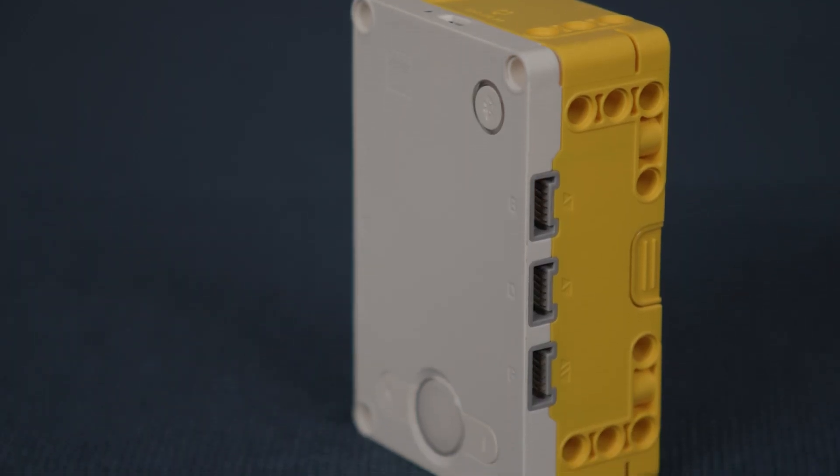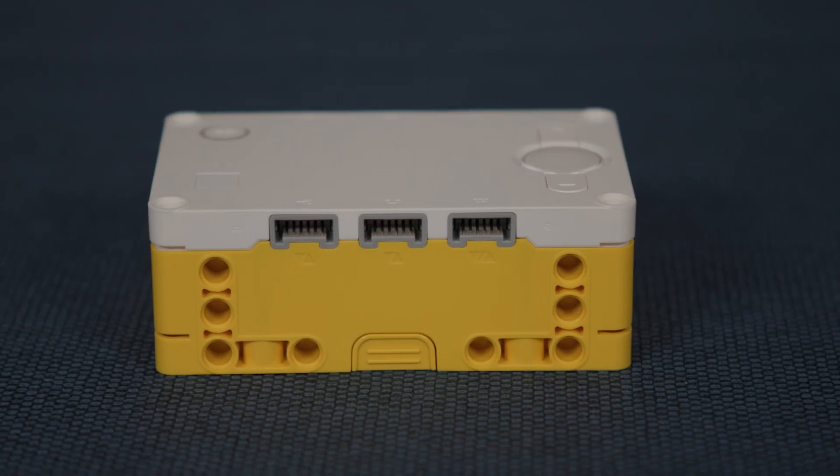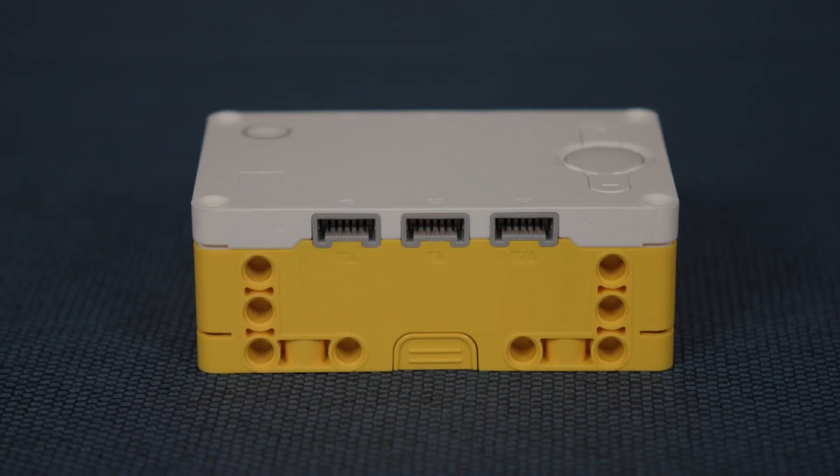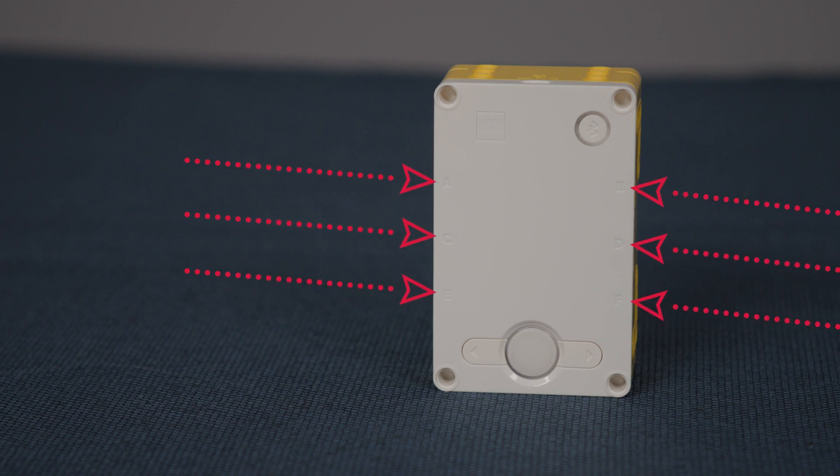Along the sidewalls of the smart hub, you will notice three input and output ports on either side. These ports make it easy to connect any of the included sensors from the Spike Prime Kit. The ports are each named using an alphabetic letter, which is useful when coding an instruction to a specific sensor or motor.